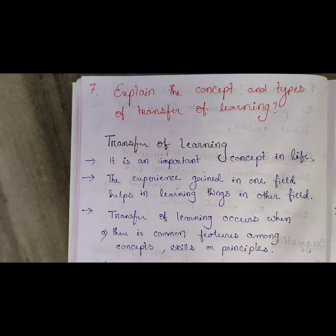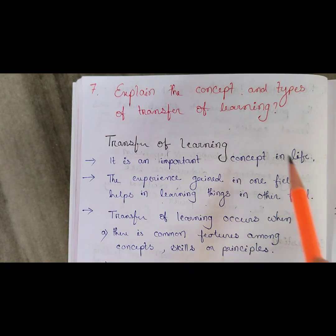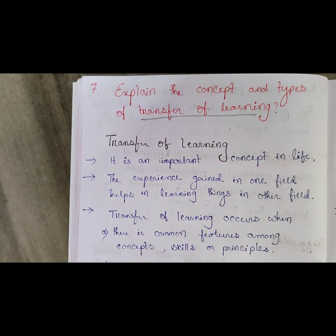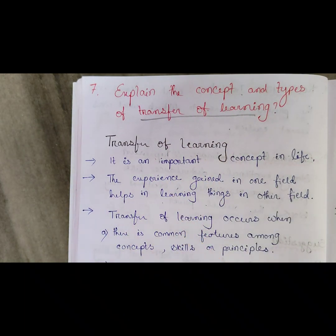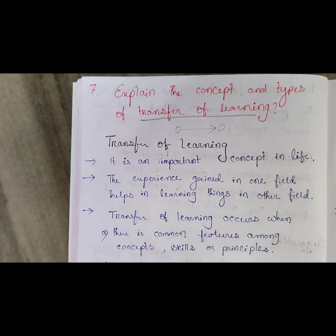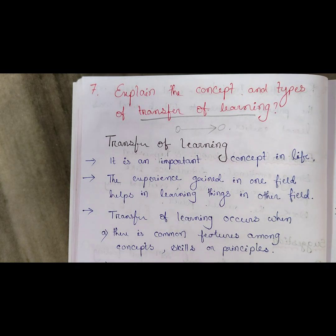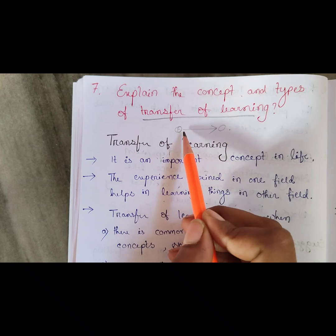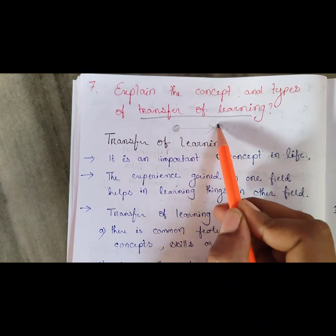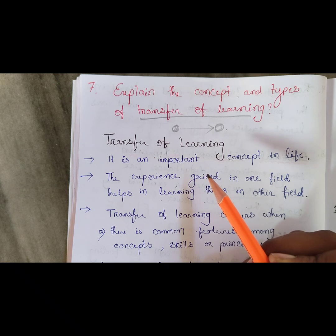What you will study here: concept and types of transfer of learning — or we can say transfer of training. So what do you mean by transfer? Transfer means from one area to another area, one place to another place. Transfer of learning means you will study something here and that will help in another way, in another subject. One subject helps in another subject — this is called transfer of learning.